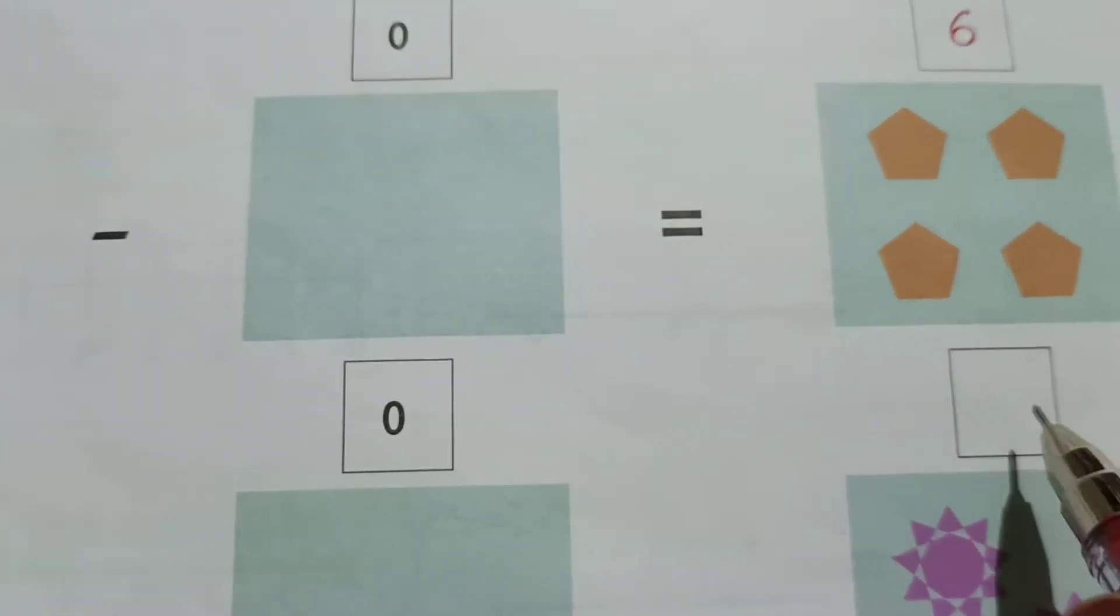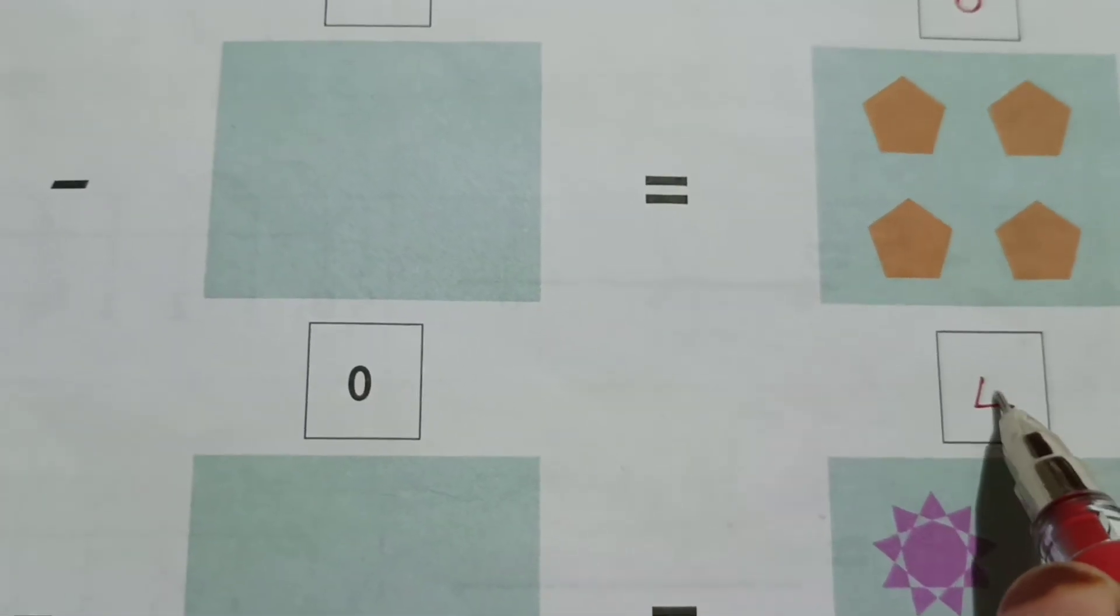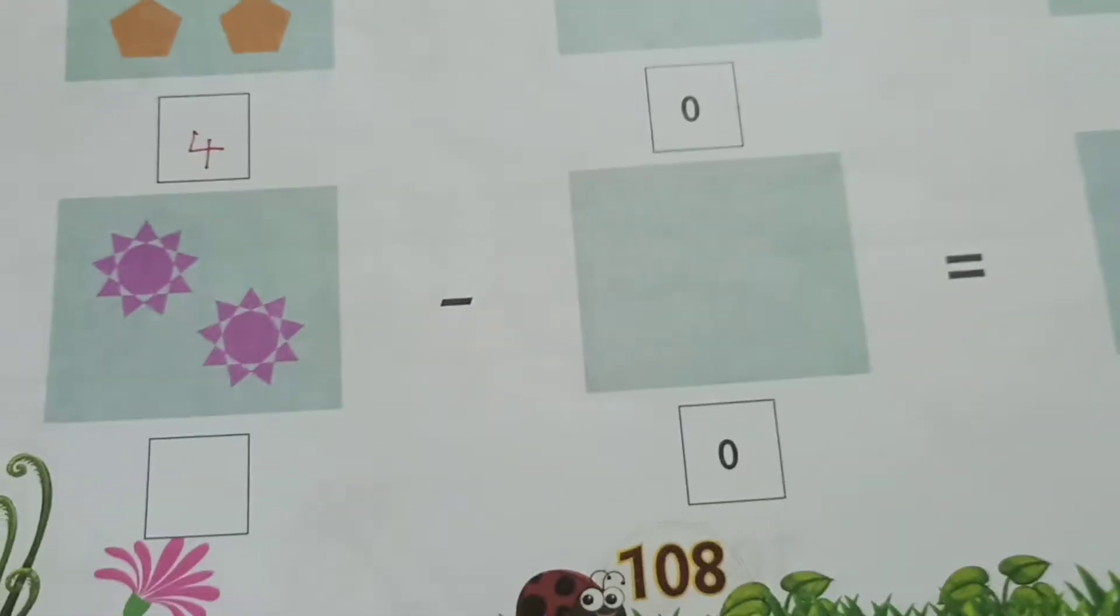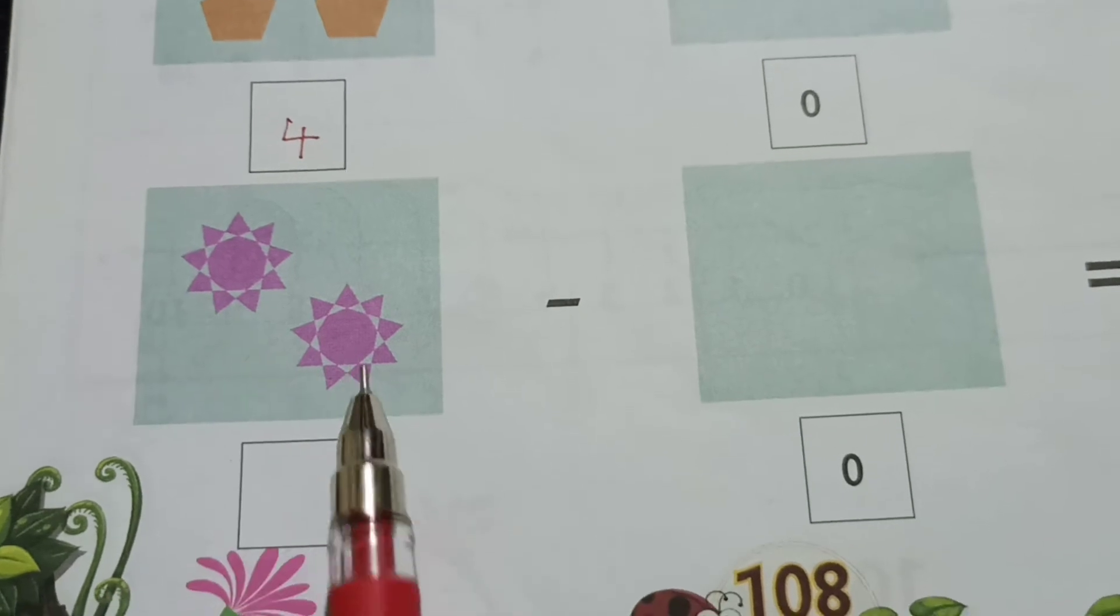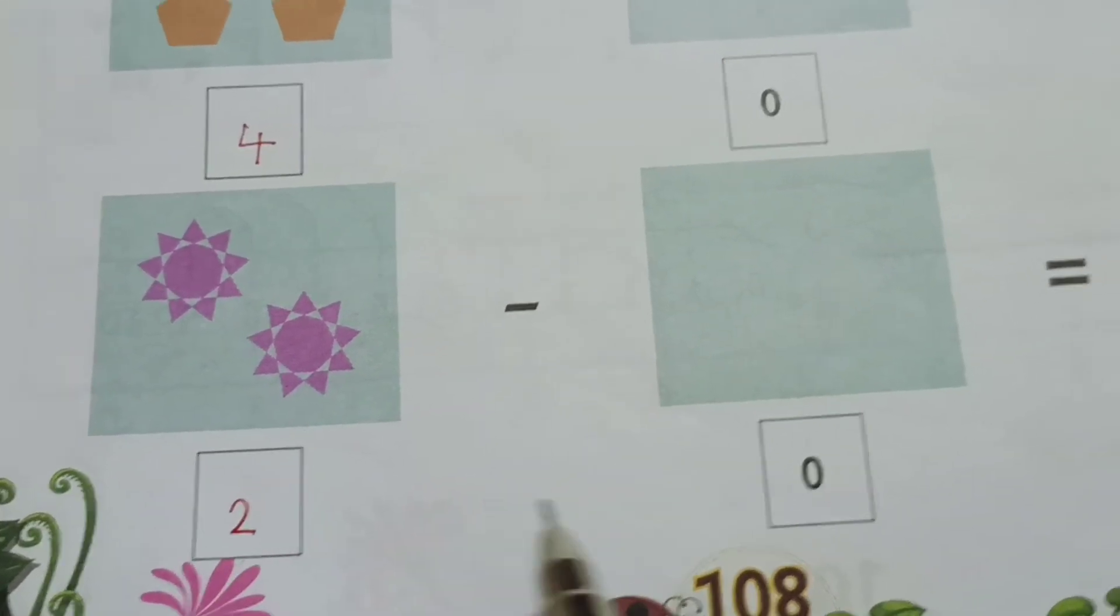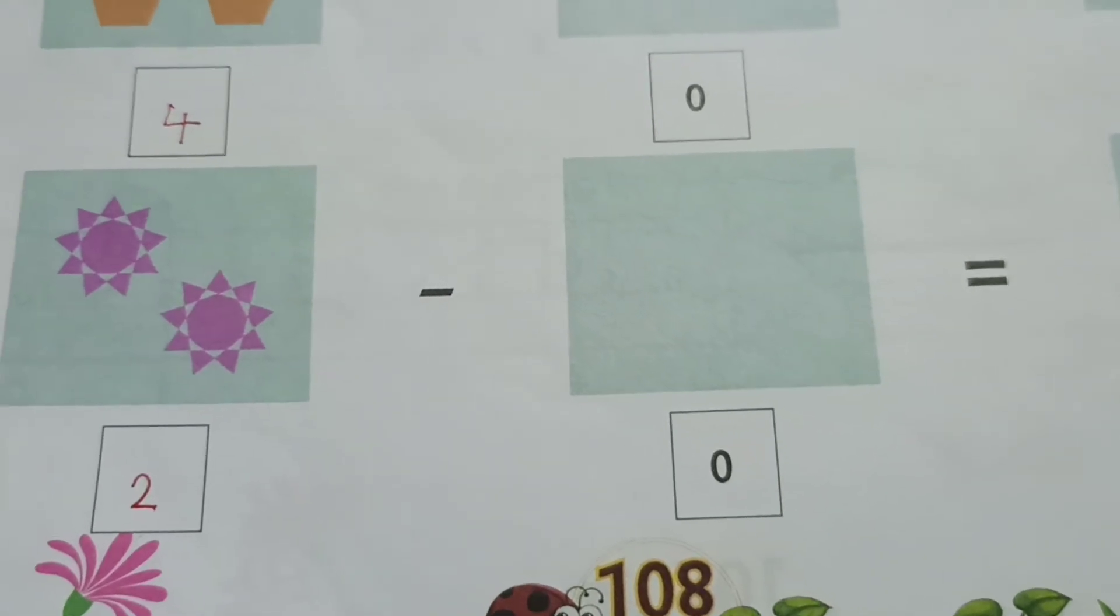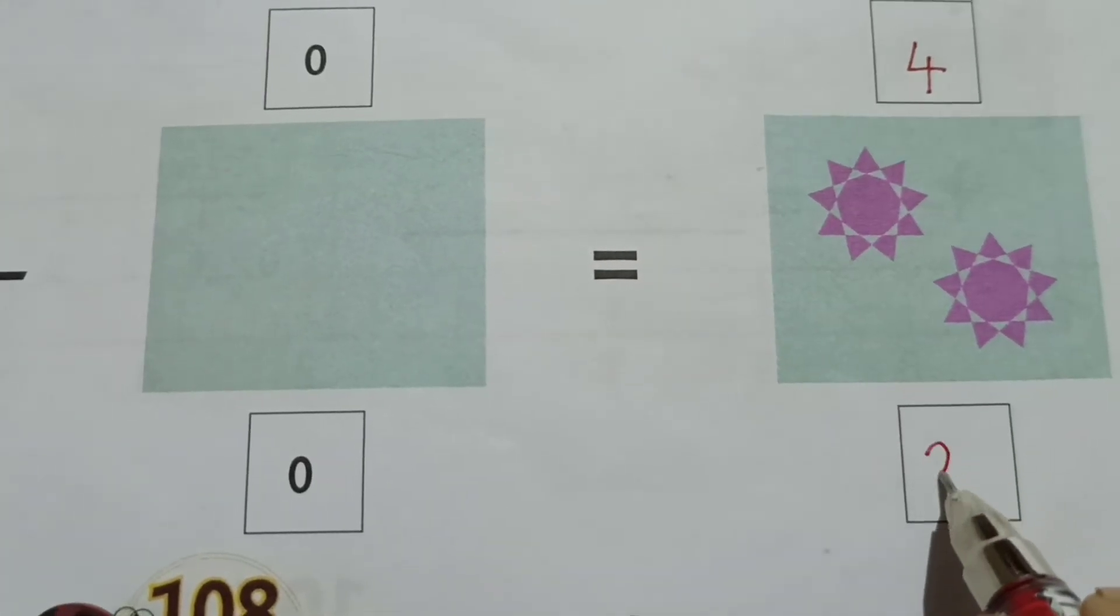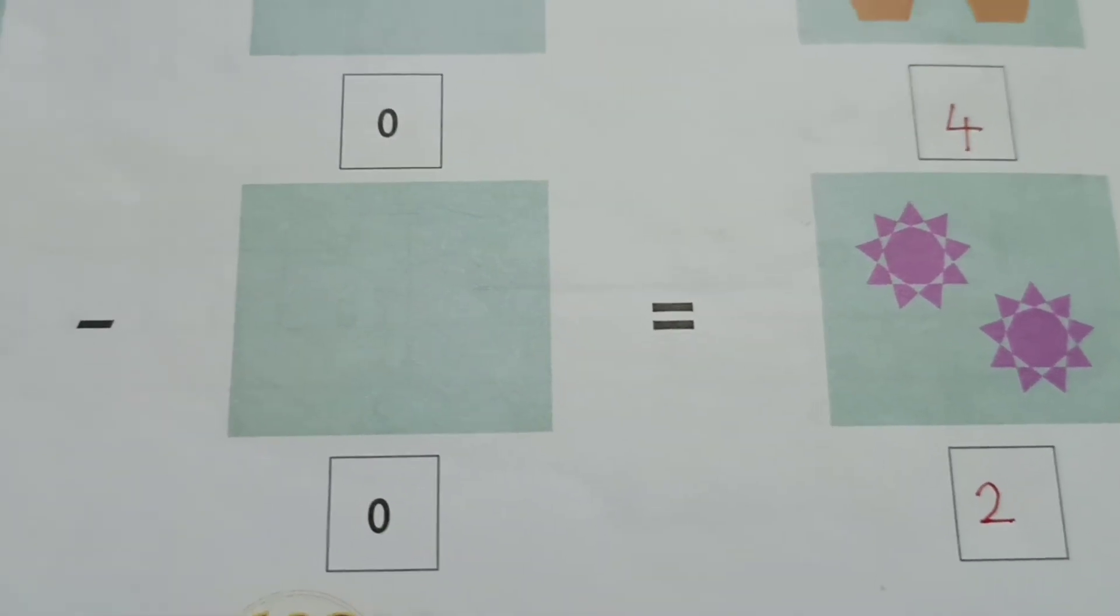4 minus 0 is 4. Next one is 1, 2. 2 minus 0. 2 minus 0 is 2. The answer is same.